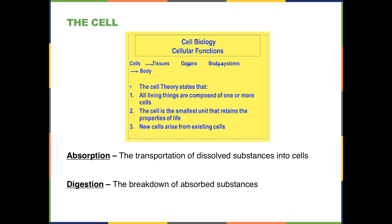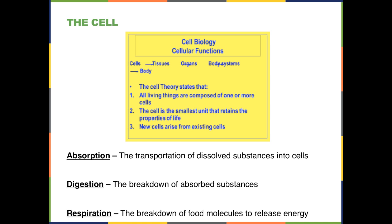Digestion is the process where we break down absorbed substances. The third aspect is called respiration, which is a specific form of breakdown in which food molecules — many times resulting from digestion after absorption — are broken down in such a way that energy is released, captured, and then used for the cell's functions.